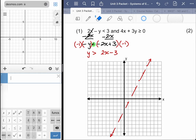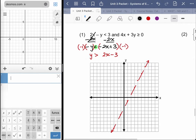So for the shading part of it, I just use a test value. Now that test value can be whatever you want, but the more convenient the value, the better off you're going to be. So here I would test 0, 0 because 0, 0 is not on the line.